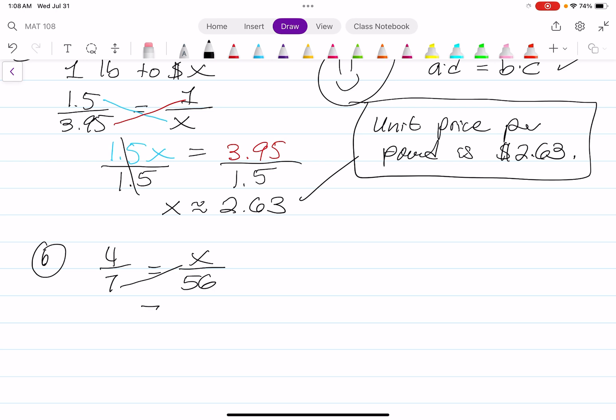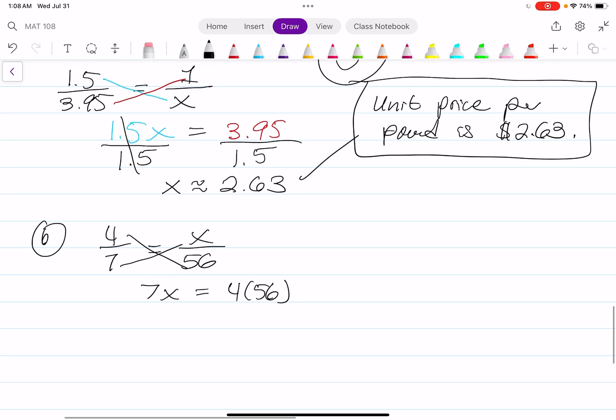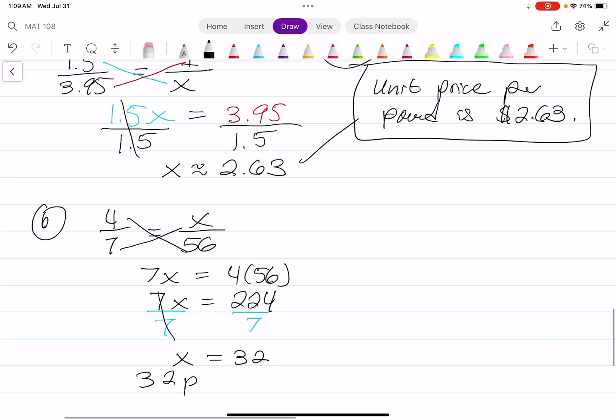We can set that up as a ratio and cross multiply. That's 7 times X, which equals 7X, and that equals 4 times 56. 7X equals 224. To solve for X, divide both sides by 7, and that equals 32. 32 patrons.